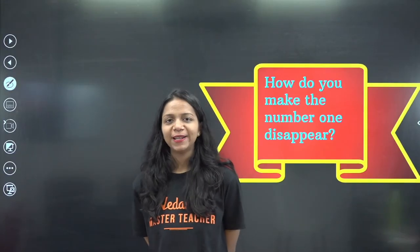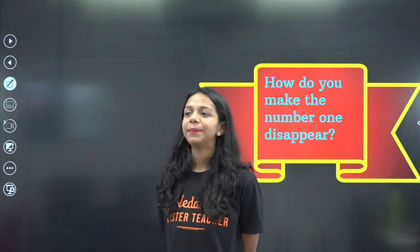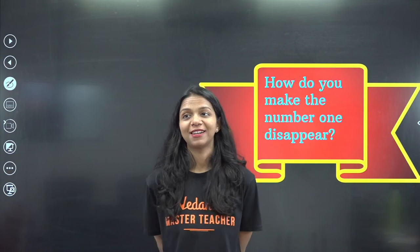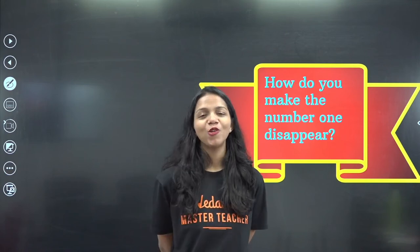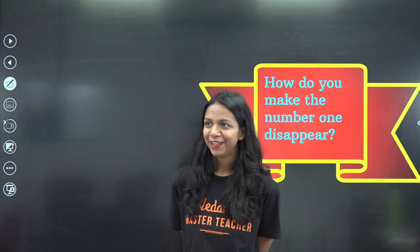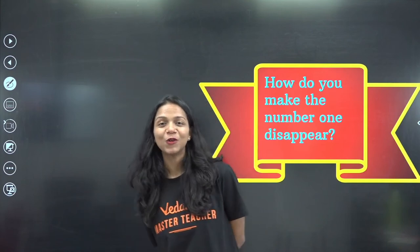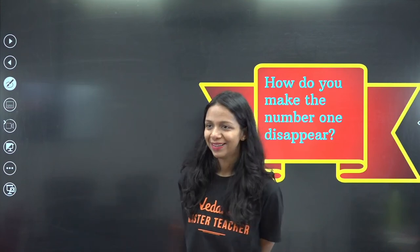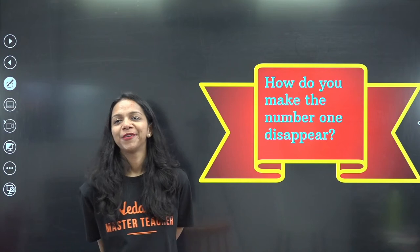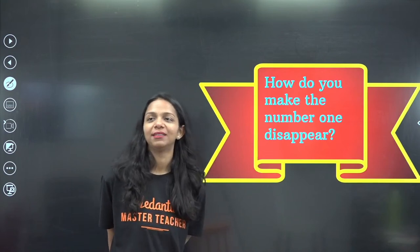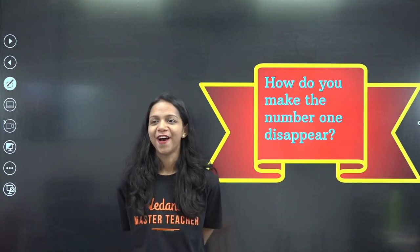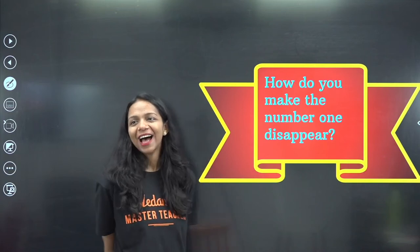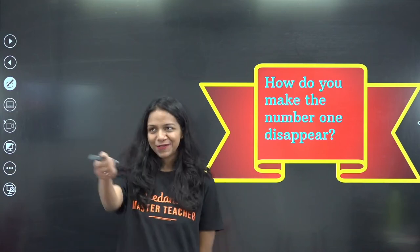The first riddle I am going to ask you before we start today's session is: How do you make number one disappear? Tell me quickly, if you think you know the answer without googling. By subtracting one from it? The answer — you will tell me in the comment section below if you know it. Let's start.